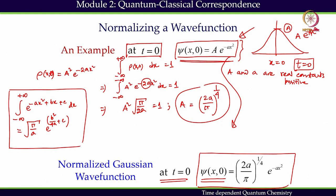In the next module we will find out the consequences of this. What we have observed is that we begin with a normalized wave function. Why do we need a normalized wave function? Because only a normalized wave function can give statistical interpretation. If that statistical interpretation, on which the entire quantum mechanics has been built, fails, then there is no meaning of quantum mechanics anymore. That is why we have to begin with a normalized wave function in quantum dynamics.